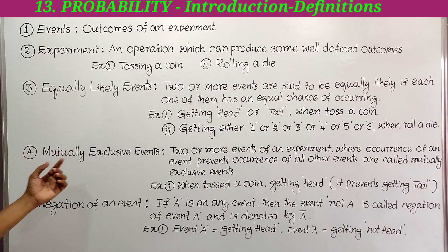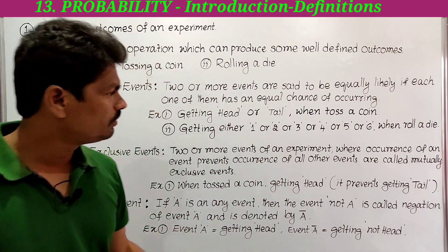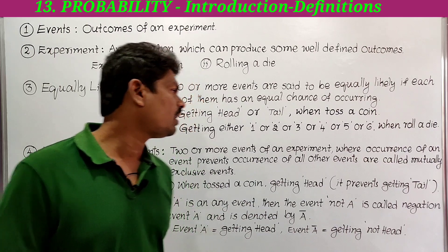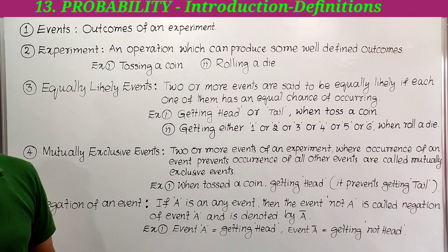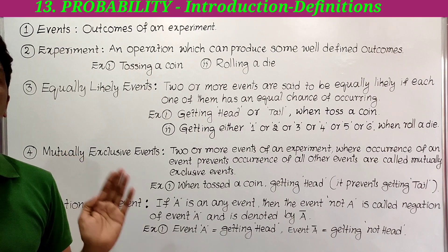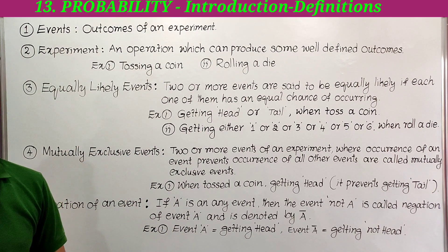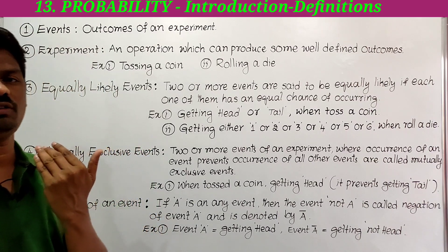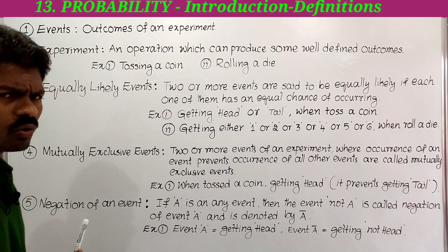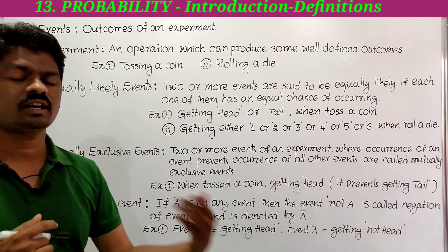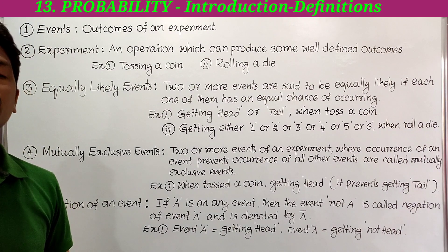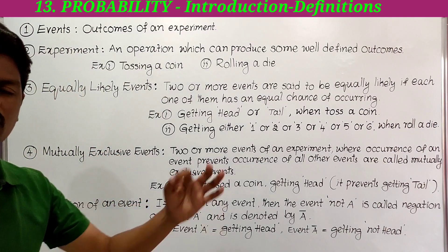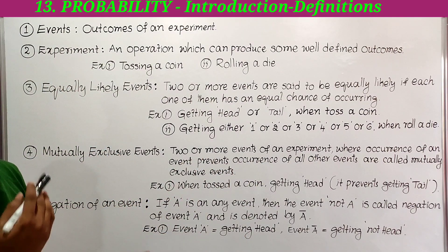Next, mutually exclusive events. Two or more events of an experiment where the occurrence of one event prevents the occurrence of all other events are called mutually exclusive events. For example, when tossing a coin, if we get head, it prevents getting tail — and if we get tail, it prevents getting head. So getting head and getting tail are mutually exclusive events.